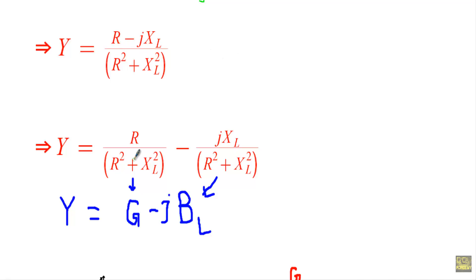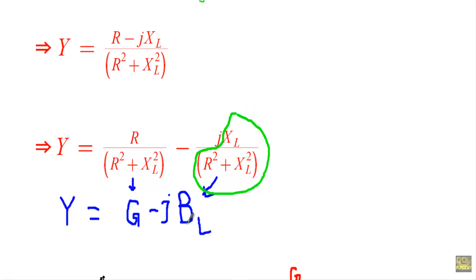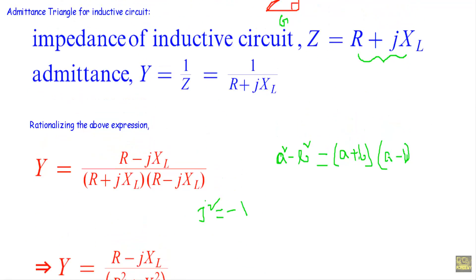Decomposing the numerator, we get Y = R/(R² + XL²) − j·XL/(R² + XL²). The ratio of resistance to the square of impedance is the conductance G, and the ratio of reactance to impedance squared is the inductive susceptance BL. Therefore the admittance of an inductive circuit is Y = G − jBL.